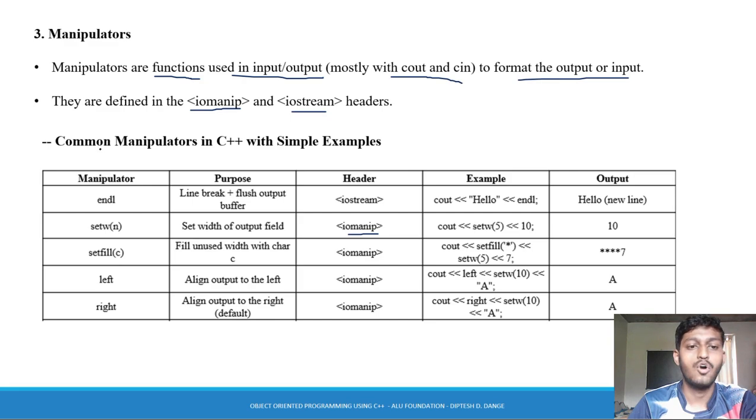Manipulators are functions. For example, endl - it's one sequence, it's the end and it's the next line if we print it. We use endl for line break plus flush output buffer. iostream, we can cout hello and endl and the next line will print it.